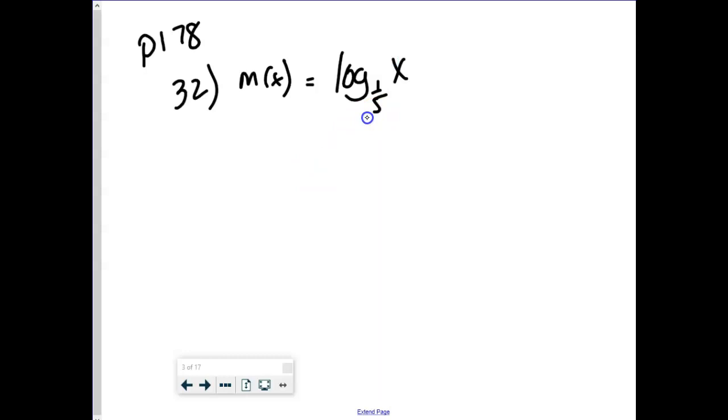All right, so it says log base one-fifth of x. I have no idea what that looks like, right? All I know is there's going to be a vertical asymptote at zero. So when I get to the sketching part, there's literally just one thing I know. Well, two things, I guess. I know for a fact that because there's no transformation, there's going to be a vertical asymptote right here. I also know because there's no transformations that this logarithm will go through the ordered pair one-zero.